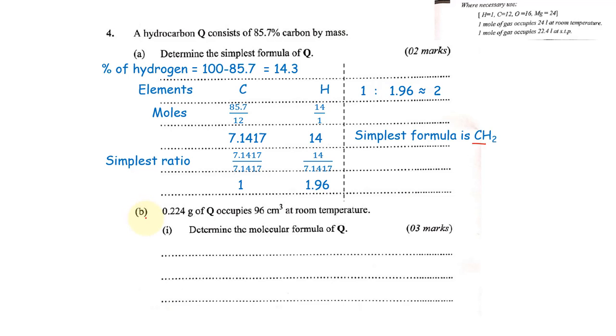Part B: 0.224 grams of Q occupies 96 cubic centimeters at room temperature. Determine the molecular formula of Q. They want us to find the actual formula of Q. For us to do that, we need to bring in some other theory. They have told us it occupies 96 at room temperature, but we are dealing with volume. If it's a gas, we shall always deal with volumes.